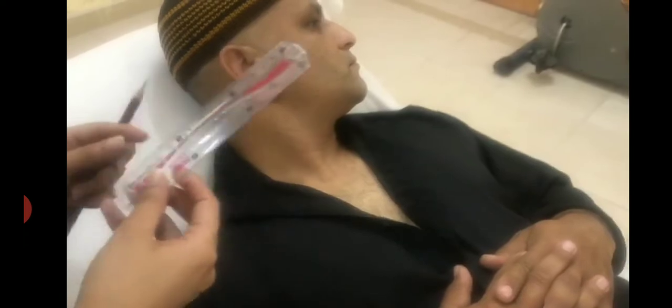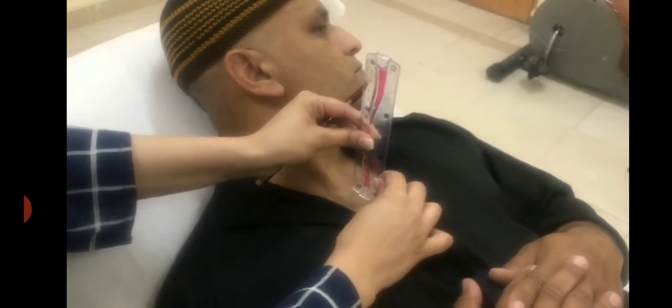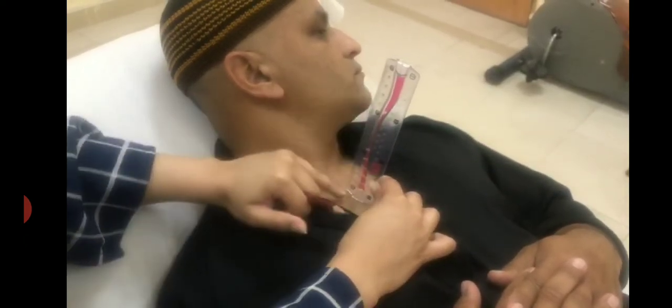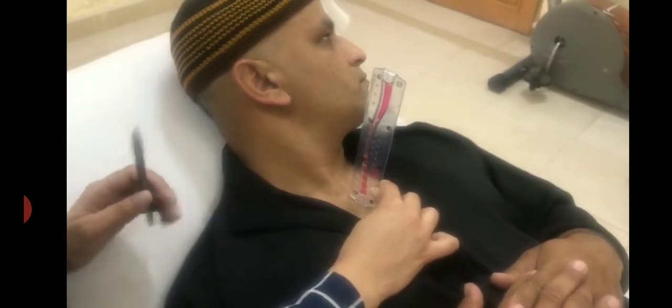Now, we palpate the sternal angle. The bony prominence will come. We need to keep the scale. The scale needs to be in centimeters, and the 0 centimeters will be placed vertically at the sternal angle.